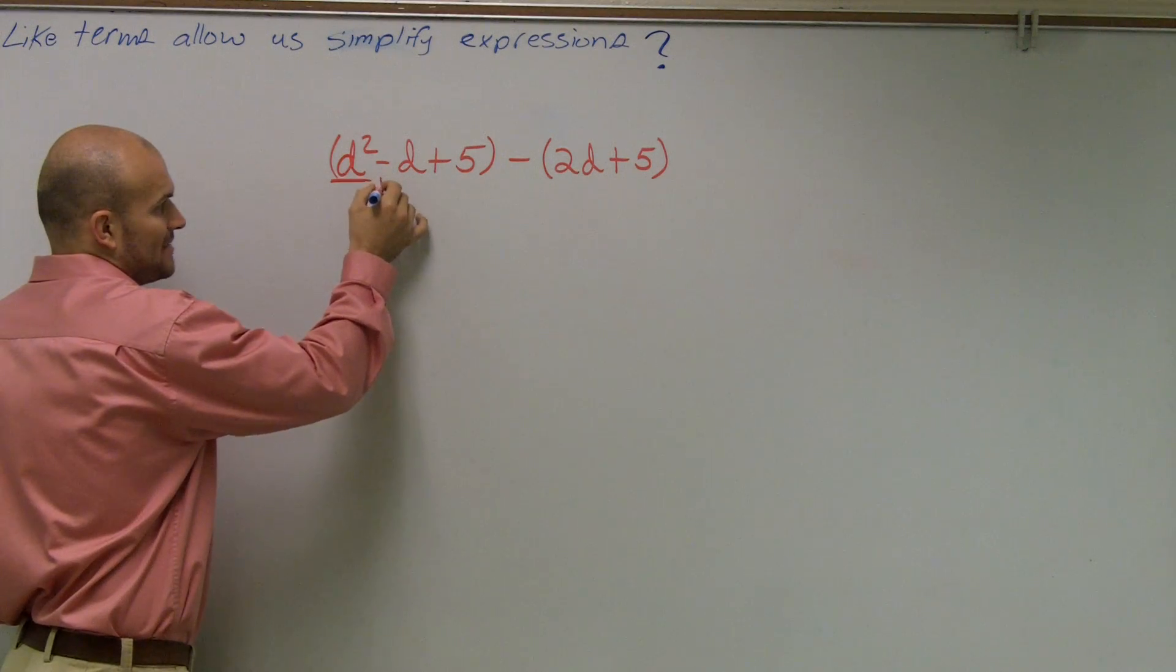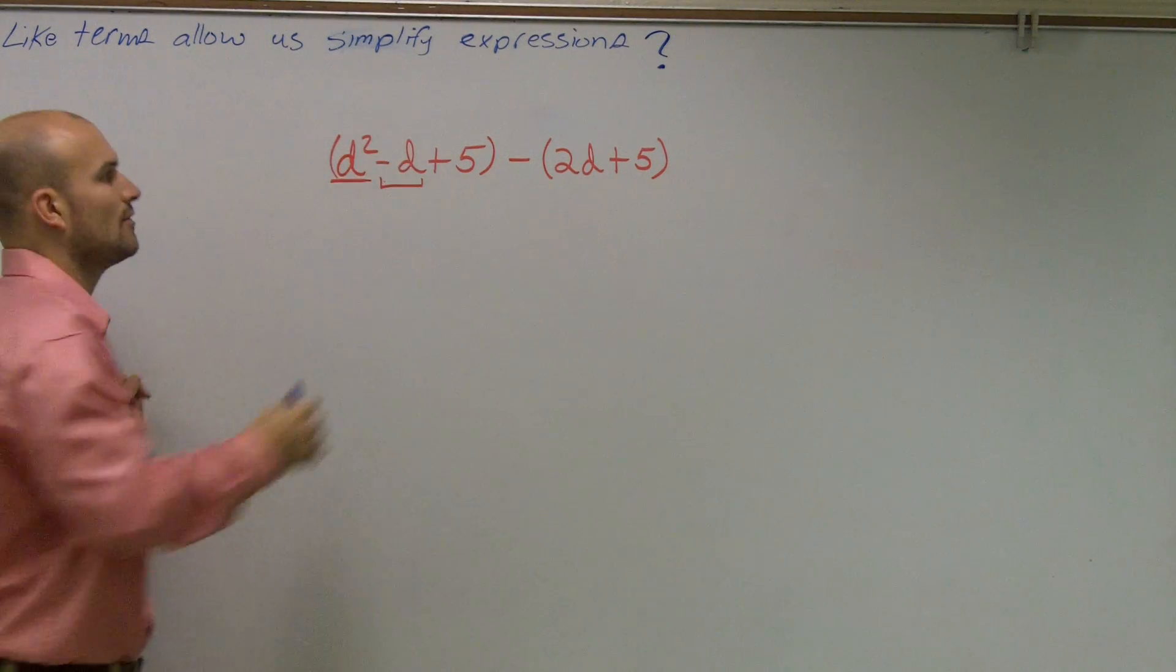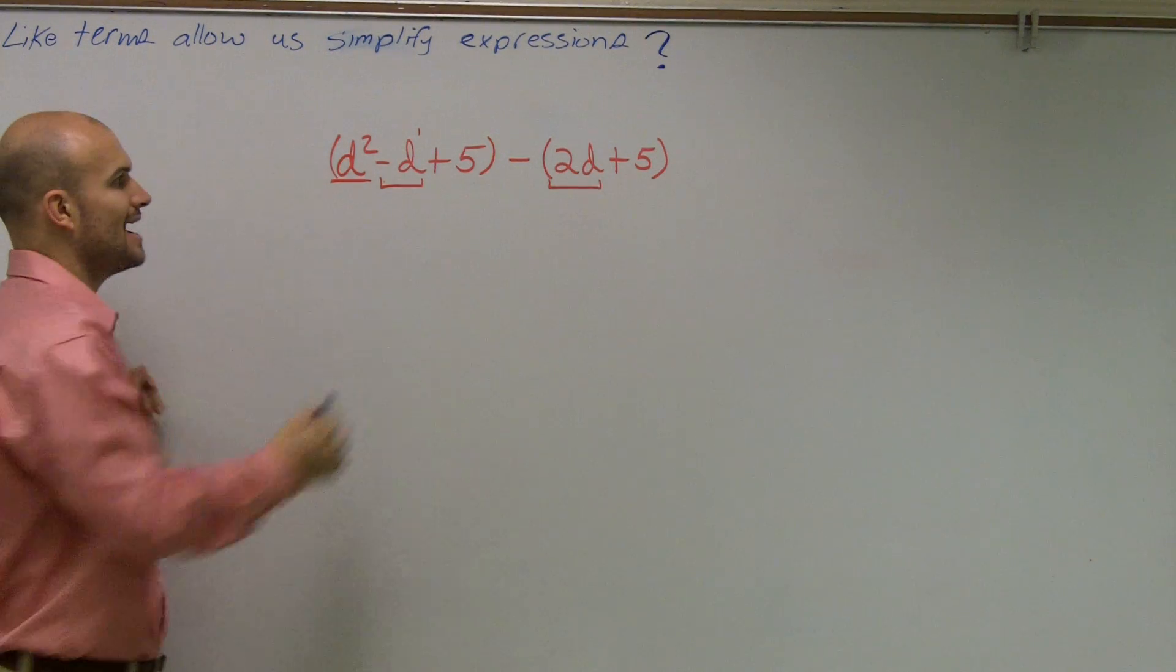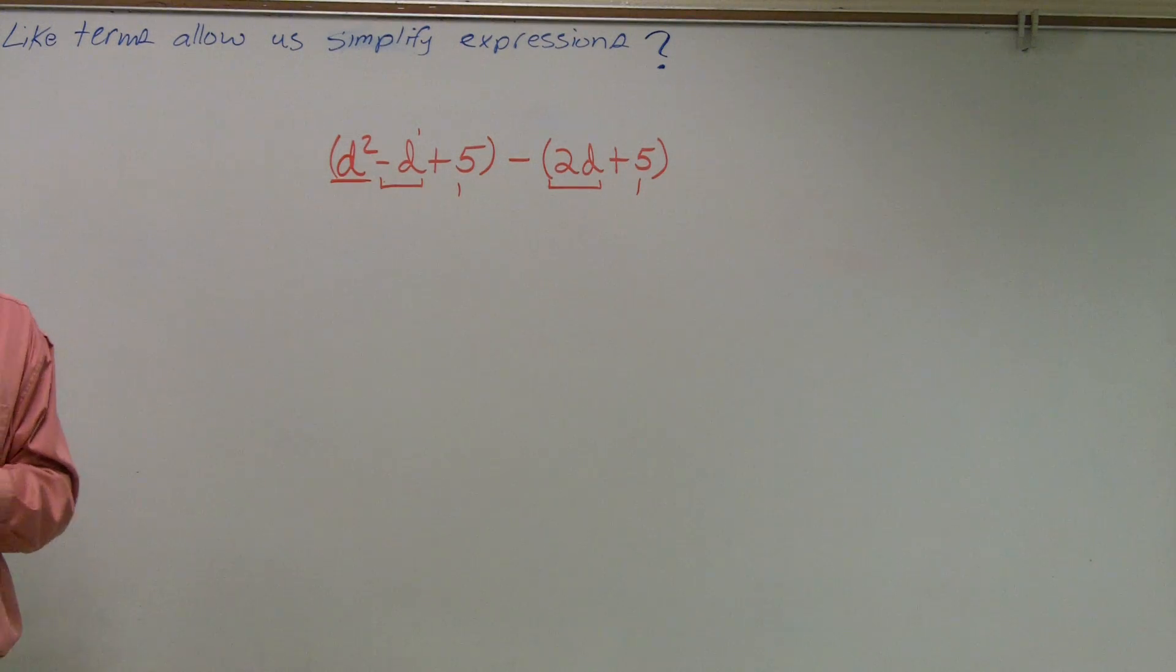Then I have a negative d. Are there any terms that have just a d to the first power? Yes, we have this 2d up here. Then lastly, we have two numbers, 5 and 5. And those are going to be our like terms as well.